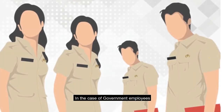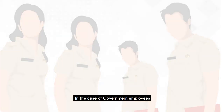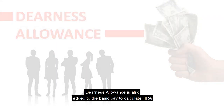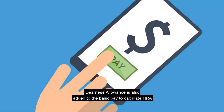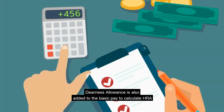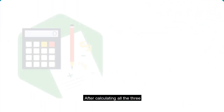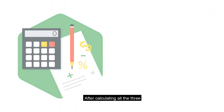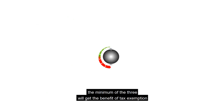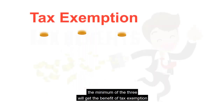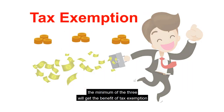In the case of government employees, DA (Dearness Allowance) is also added to the basic pay to calculate HRA. After calculating all three, the minimum of the three will get the benefit of tax exemption.